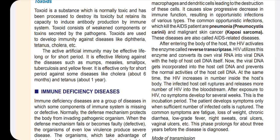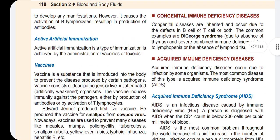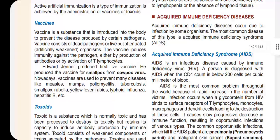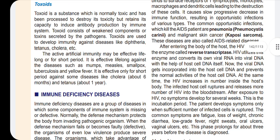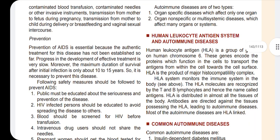Now we move to immune deficiency diseases. There are two types: congenital and acquired. In congenital immune deficiency disease, B cells, T cells, cytokines, and NK cells are damaged. In acquired immune deficiency disease, such as AIDS, the pathogen destroys T cells and breaks down the immune system.